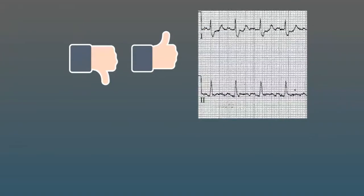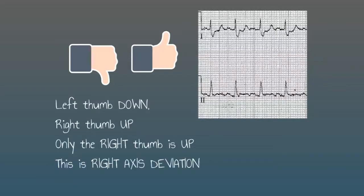In this ECG we look at lead one and there's an S wave that's at least as deep as the R wave - it's borderline really. But let's say for the sake of argument that this S wave is a little bit deeper than the R wave is tall. We're going to put our left thumb down, and then we look at lead two and notice that it's predominantly upwards - there's just an R wave so we're going to put that thumb up. Now there's an axis deviation here because one thumb is down and one is up, and it goes in the direction of the thumb that remains up. So your right thumb is up and that means it's right axis deviation in this case.